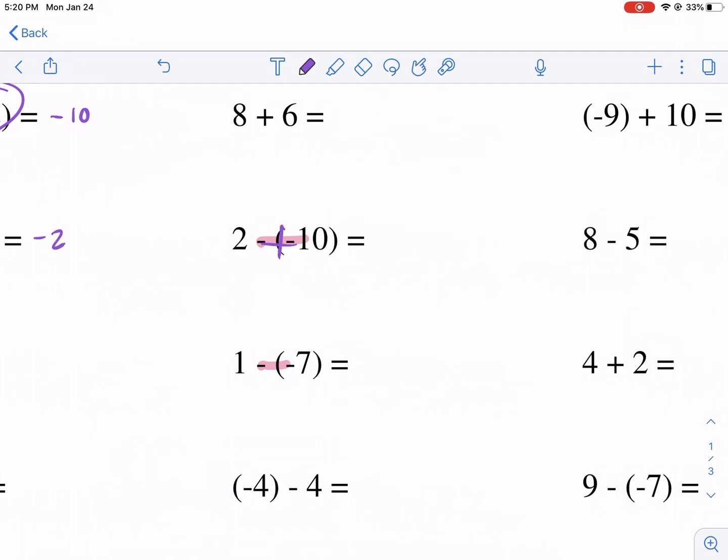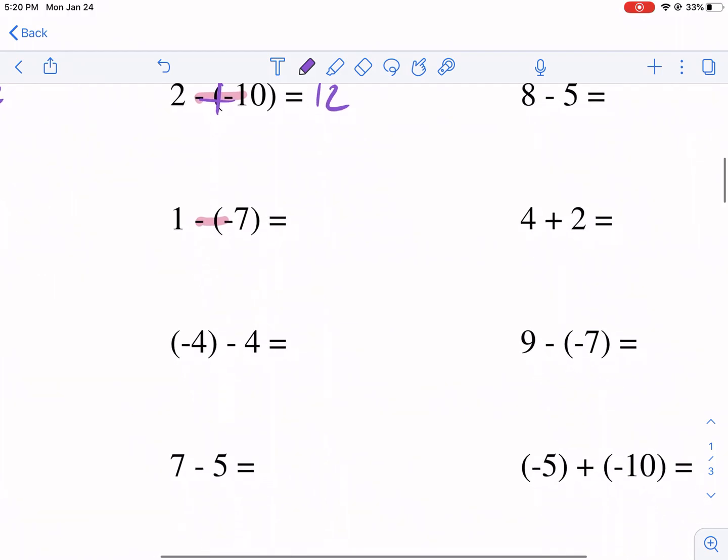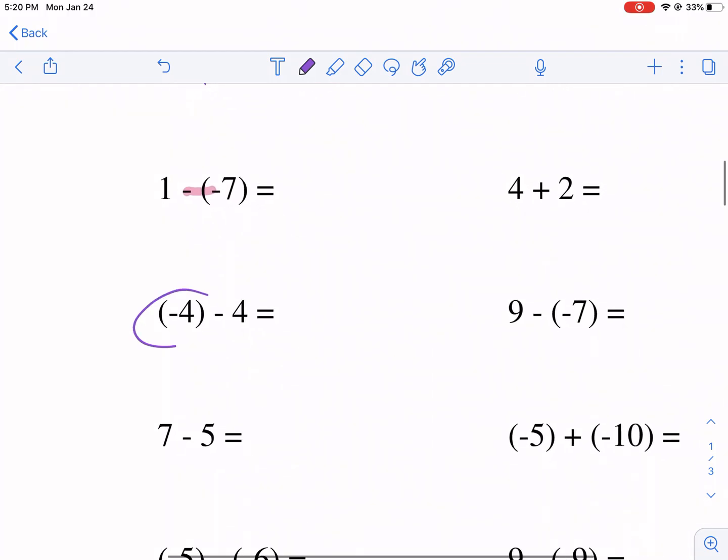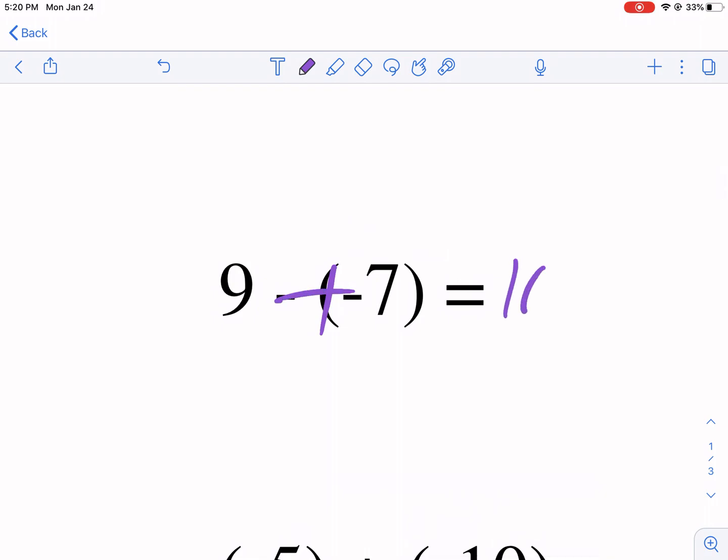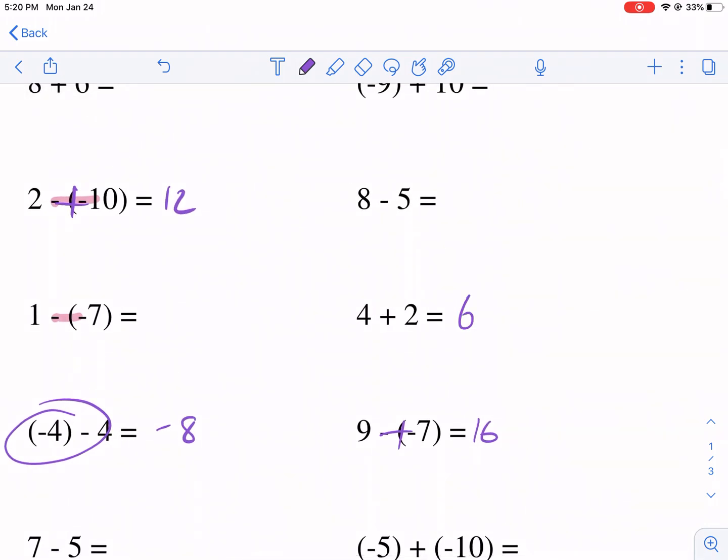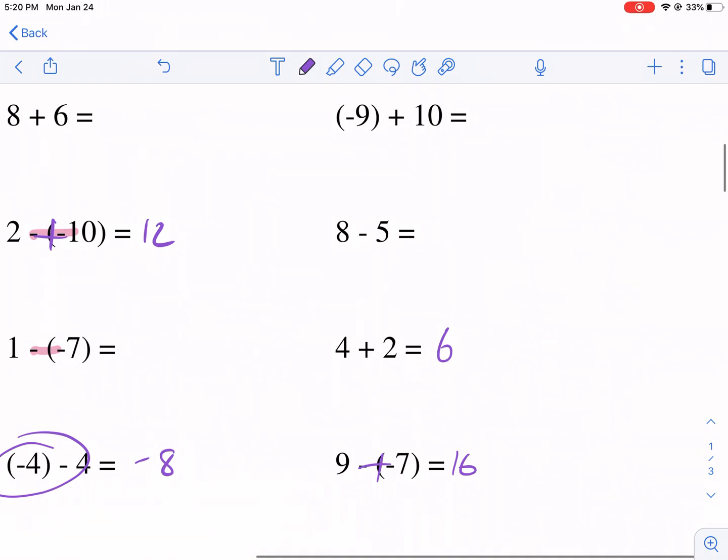We change this to plus, we get 12. I'm just doing a kind of whatever selection here. These guys on the same team, negative eight. We have to change to plus that's just normal 16. There's an easy one, four plus two, six, eight minus five, same philosophy.